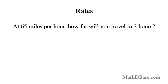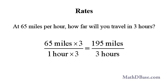The basic rate is always a fraction in lowest terms. At 65 miles per hour, how far will you travel in 3 hours? The distance covered in 3 hours at 65 miles per hour is 65 miles times 3 divided by 1 hour times 3, or 195 miles in 3 hours.